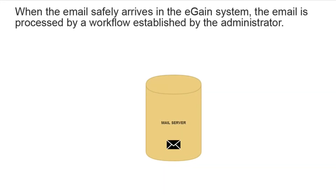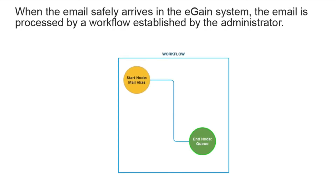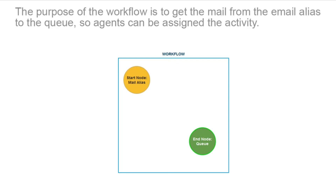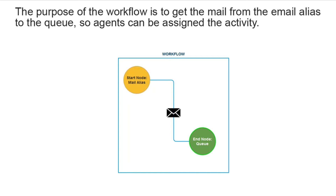When the email safely arrives at the alias, the email is processed by a workflow established by the administrator. The purpose of the workflow is to get the mail from the email alias to the queue.